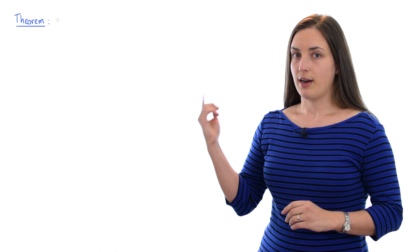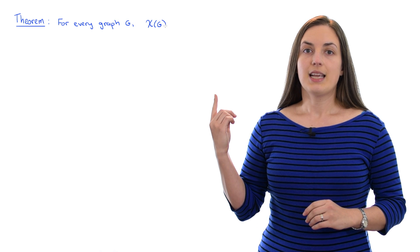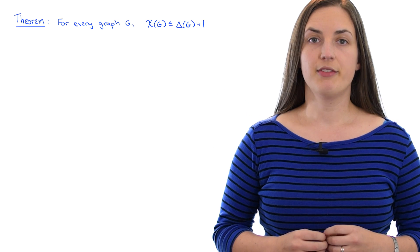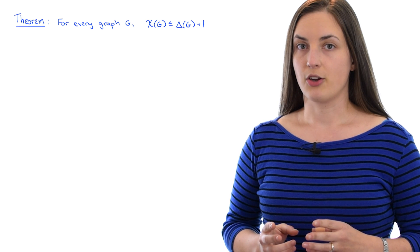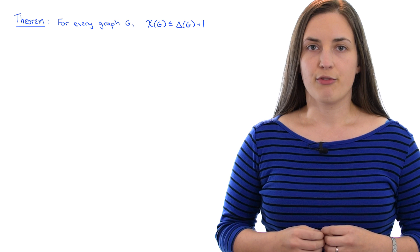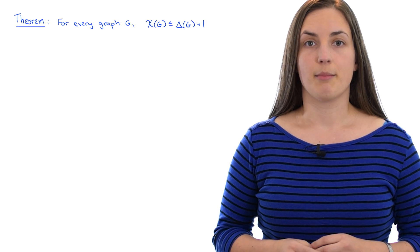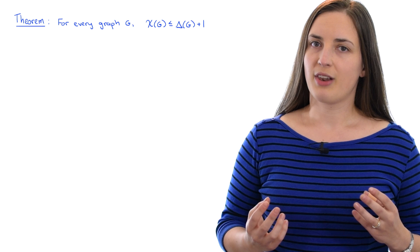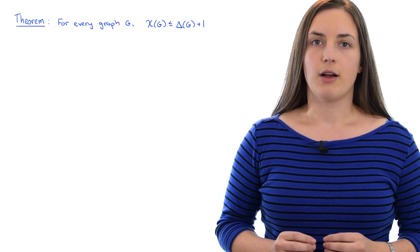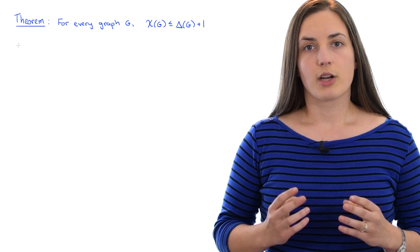In this video we're going to prove a basic upper bound on the chromatic number of any graph. We're going to prove that for every graph G, the chromatic number of G is at most the maximum degree plus one. In the previous video we saw that a bipartite graph has chromatic number two, and a bipartite graph could have maximum degree being a very large number, so this bound doesn't always reflect the true chromatic number very well, but it is a bound on the chromatic number for any given graph.